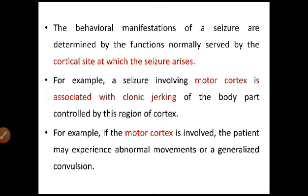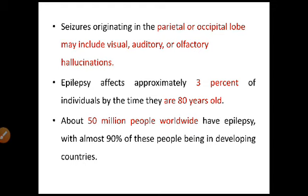If the motor cortex is involved, the patient may experience abnormal movement or generalized convulsions. Seizures originating in the parietal or occipital lobe will affect those functions controlled by those lobes — for example, visual, auditory or olfactory hallucinations. You can understand that whichever particular part has the focus, the functions corresponding to that part will get affected.